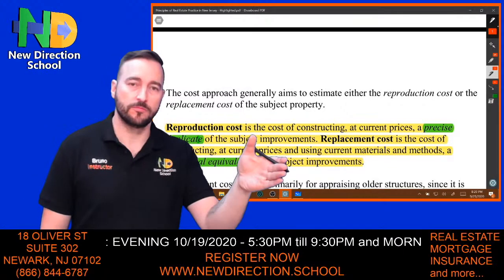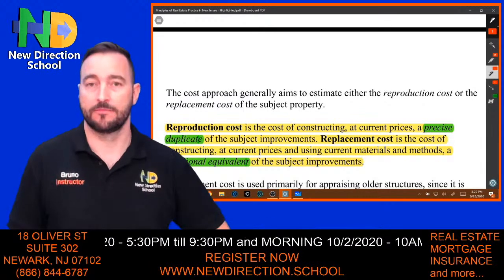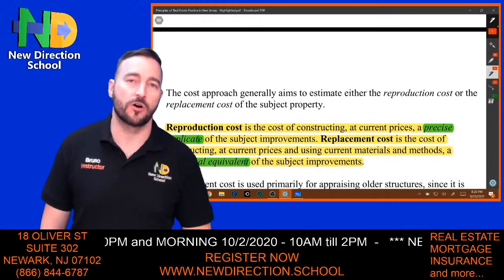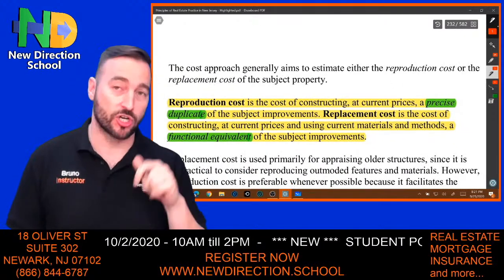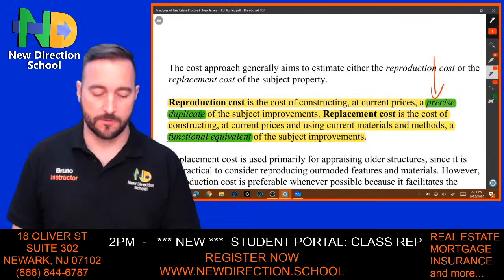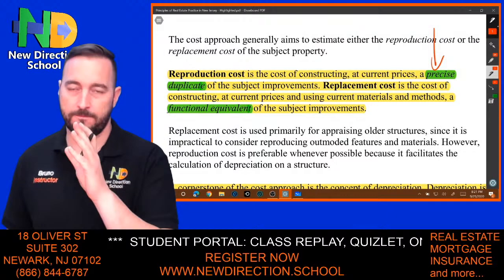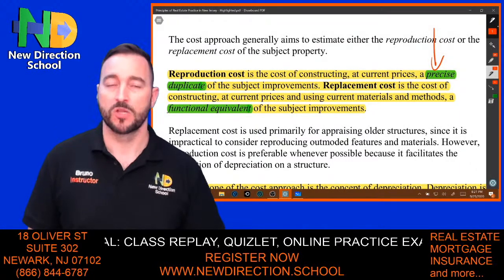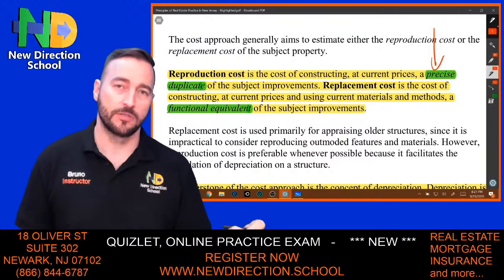If you build four houses in a row — all brand new — they all cost pretty much the same, so market value will most likely be the same. The cost approach generally aims to estimate either the reproduction cost or the replacement cost of the subject property. Reproduction cost is the cost of constructing at current prices a precise or exact duplicate of the subject's improvements. For example, if you used copper pipes originally, how much does copper piping cost today for labor and material?